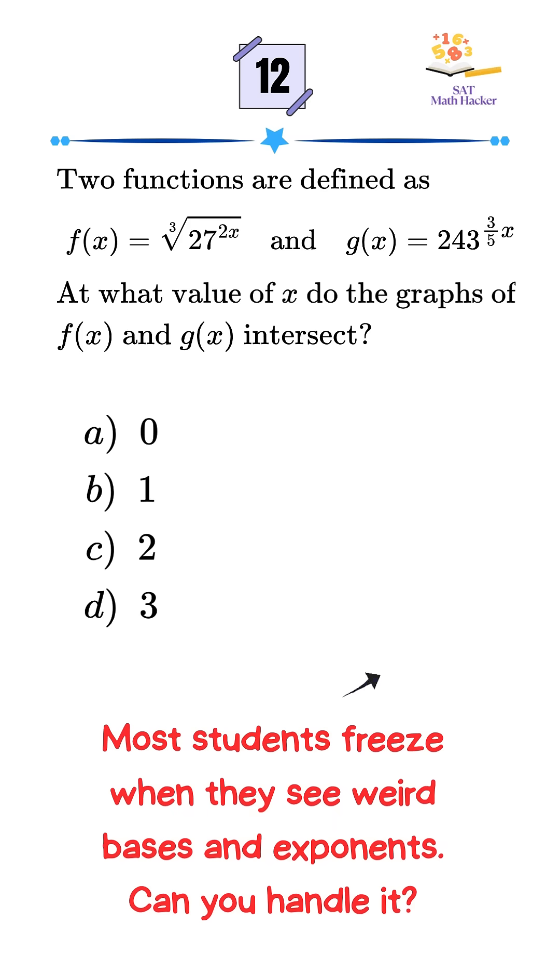In this SAT problem, we're given two functions: f of x equals the cube root of 27 raised to the power 2x, and g of x equals 243 raised to the power 3 over 5x. We're asked to find the value of x where these two graphs meet. Let's solve it.